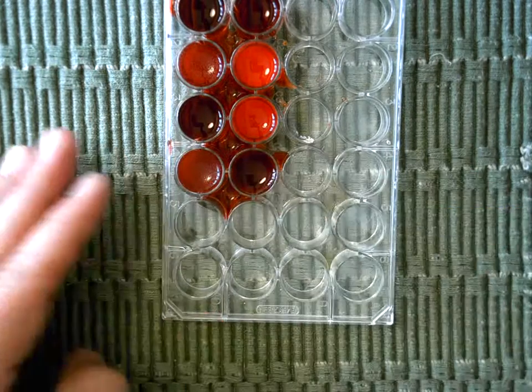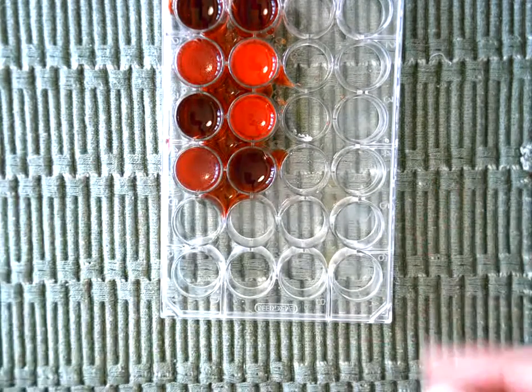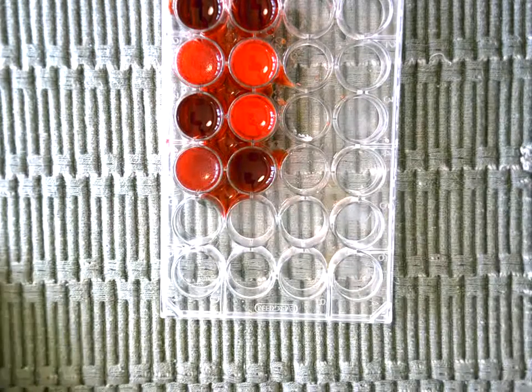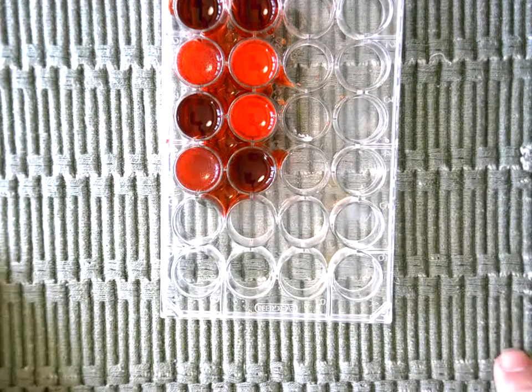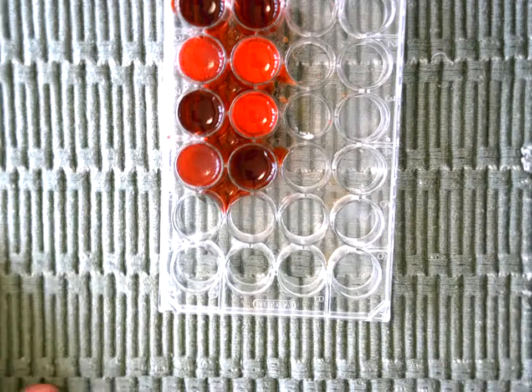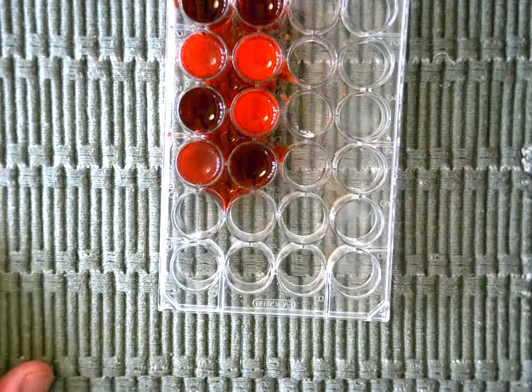Now if we remember from the lesson, someone's blood will clump if they have the antigen or the protein and the antibody. Now I'd like you to try and diagnose the blood types of these four patients using this data.